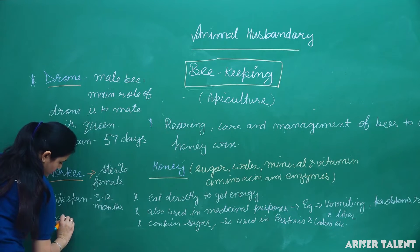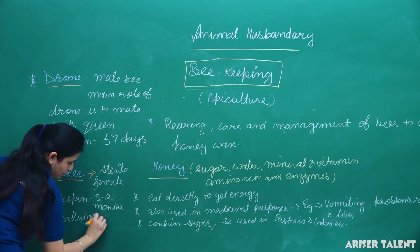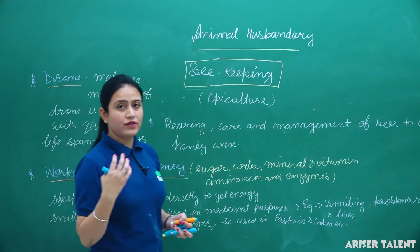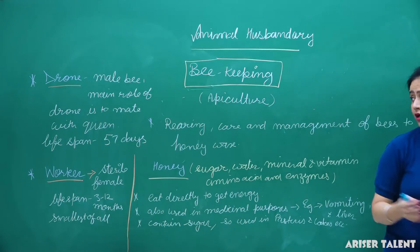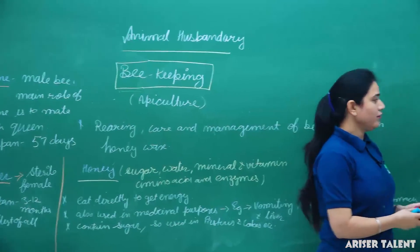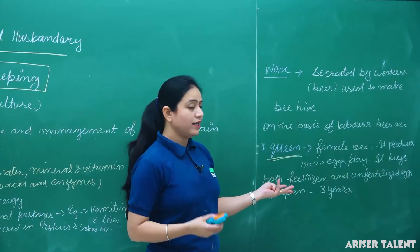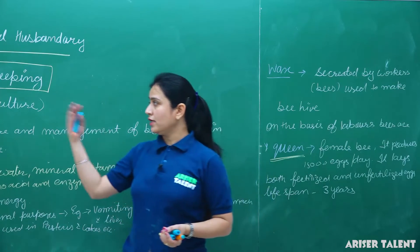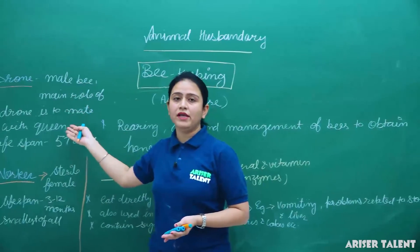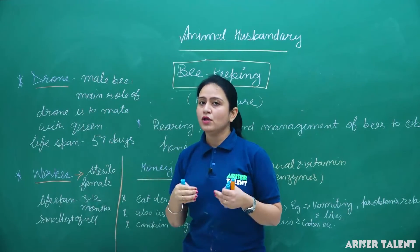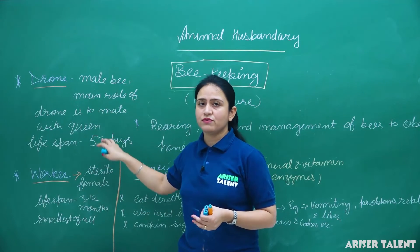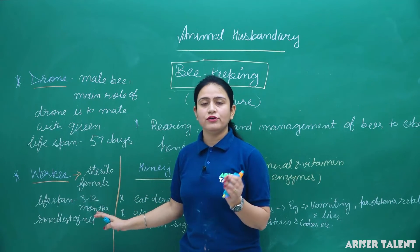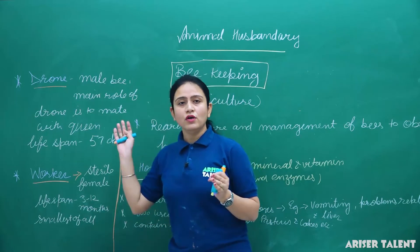Workers are the smallest of all the castes. So the three castes of bees are: queen (female, 15,000 eggs/day, lifespan 3 years), drone (male, mates with queen, lifespan 57 days), and worker (sterile female, lifespan 3–12 months, smallest of all).